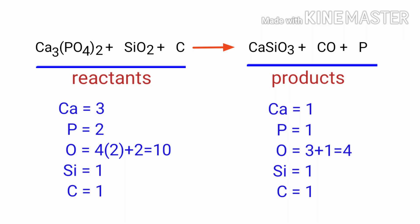The number of atoms are not balanced on both sides. To balance the chemical equation, we need to make use of coefficients. A coefficient is a number that we place in front of a chemical formula.